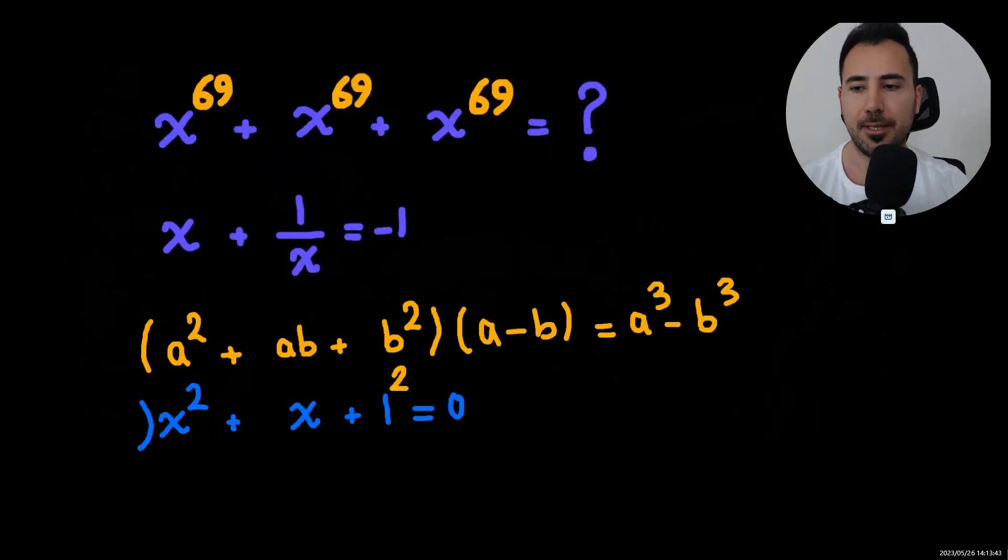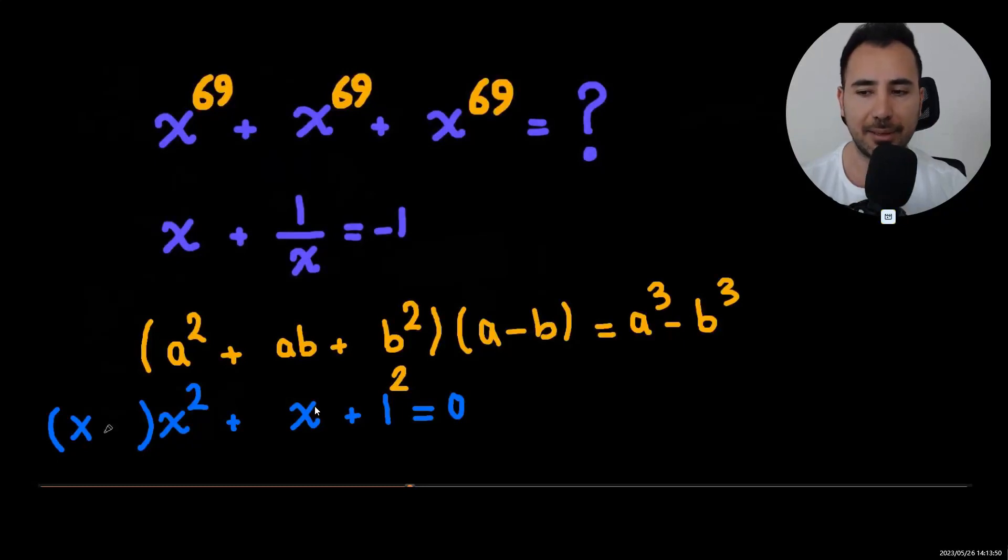So let's do the same thing. If a is x and b is one, let's multiply everything by x minus one. The right hand side is zero. x minus one times zero is zero again.